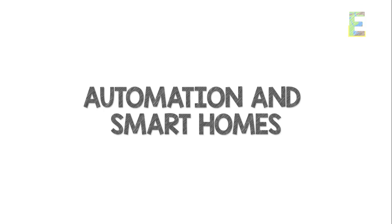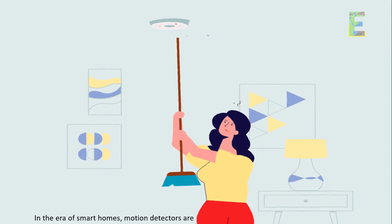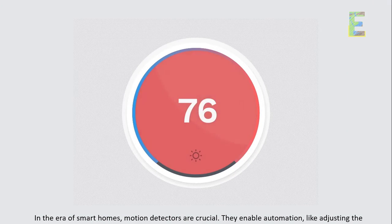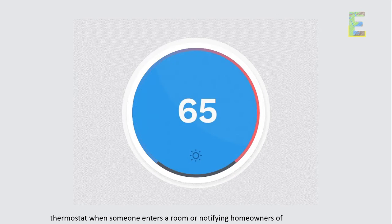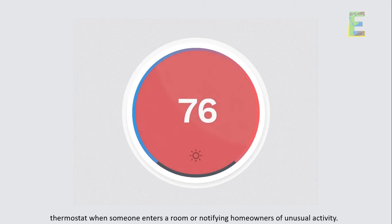Automation and smart homes. In the era of smart homes, motion detectors are crucial. They enable automation, like adjusting the thermostat when someone enters a room or notifying homeowners of unusual activity.